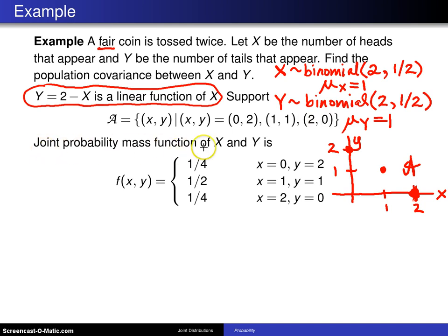This leads to a joint probability mass function of X and Y, which says the probability of getting 0 heads and 2 tails is 1/4. The probability of getting 1 head and 1 tail is 1/2, and that is doubled up because you can go heads, tails, or tails, heads. And then finally, the probability of getting 2 heads and 0 tails is also 1/4.